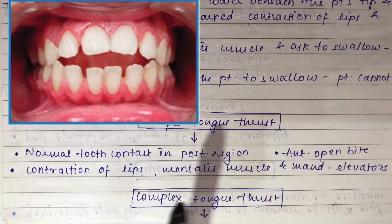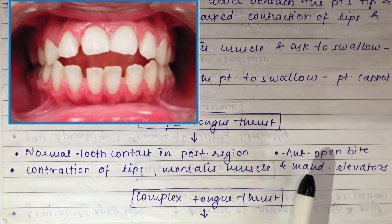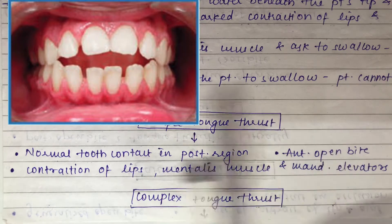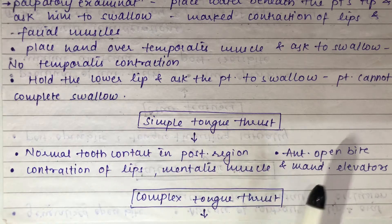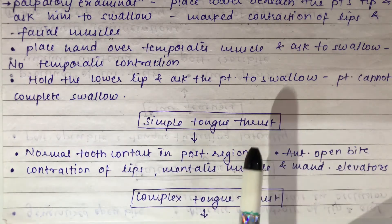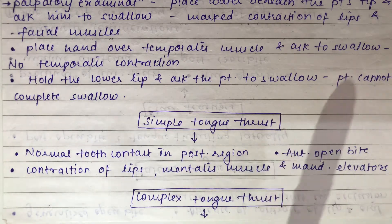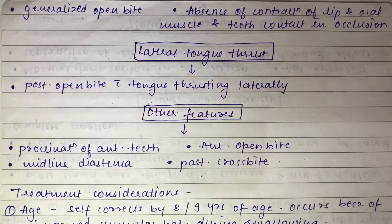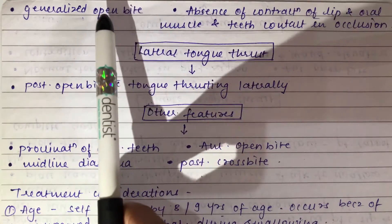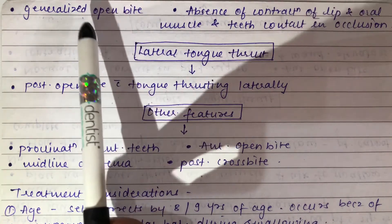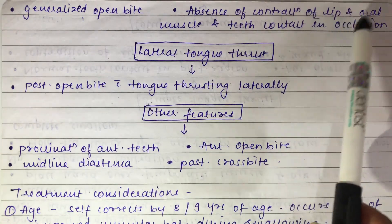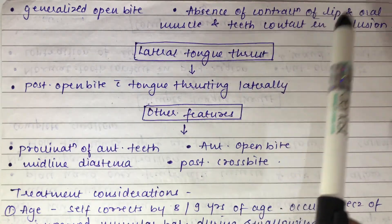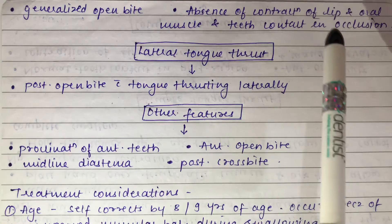In simple tongue thrust, there is normal tooth contact in the posterior region, anterior open bite, and contraction of the lips, mentalis muscle, and mandibular elevators. In complex tongue thrust, there is generalized open bite including posterior open bite, absence of contraction of lip and oral muscles, and no tooth contact in occlusion.